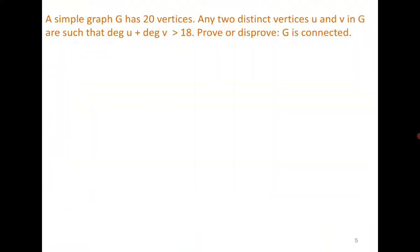Now consider a simple graph with 20 vertices where any two distinct vertices u and v satisfy degree(u) + degree(v) > 18. The question is: prove or disprove that the graph is connected. To disprove it we need a counterexample, and to prove it we need a general proof. Producing a counterexample is not easy since the graph has order 20, so let us try to prove it.